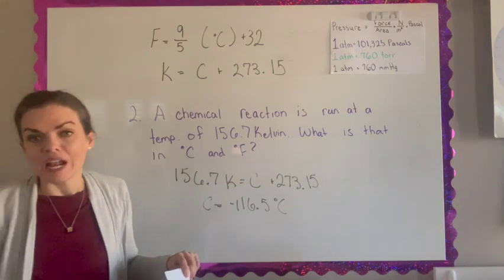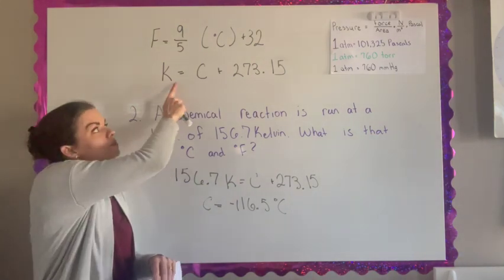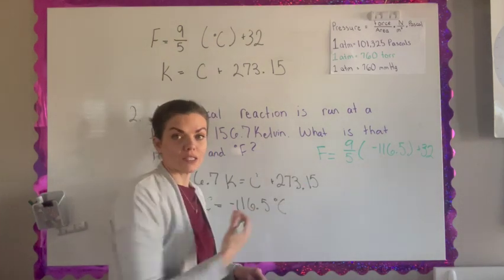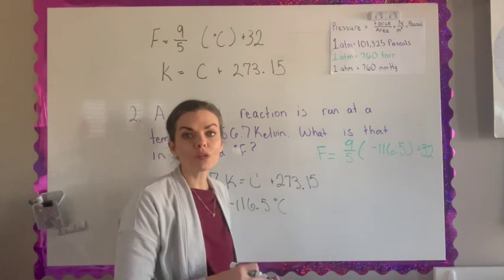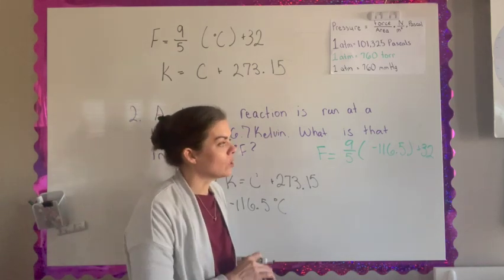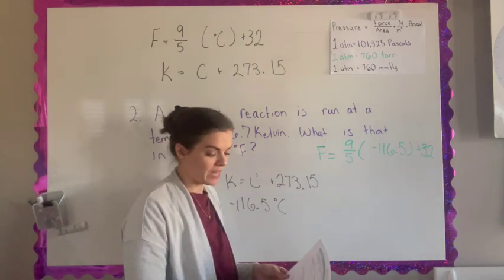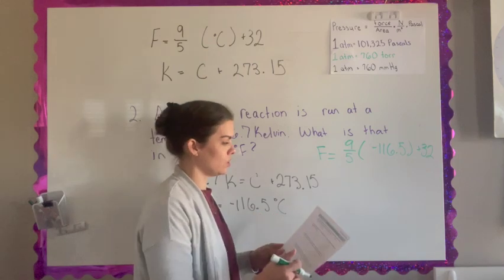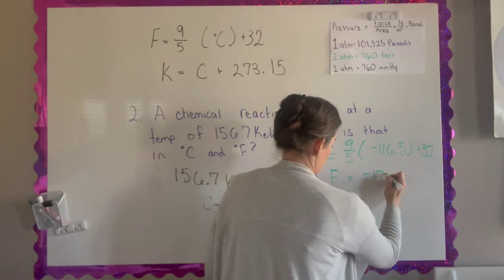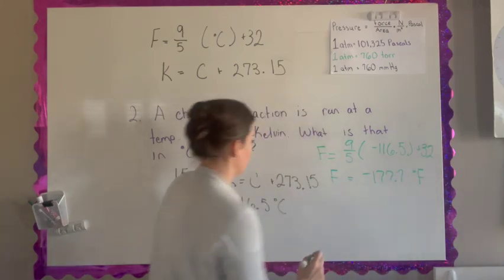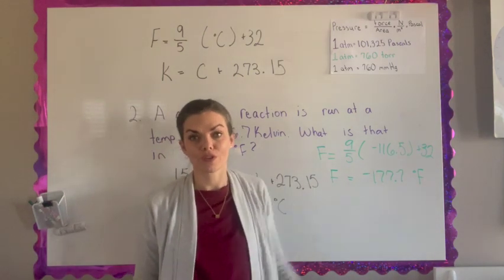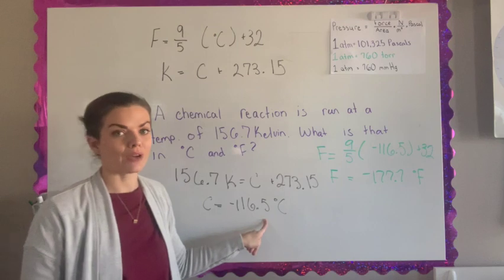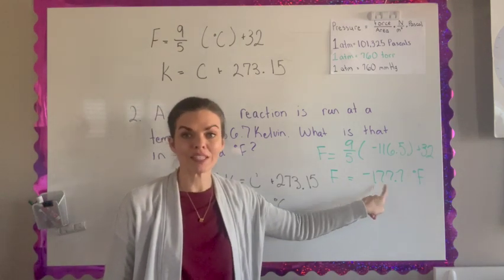Now I can't go from Kelvin to Fahrenheit. I have to go from Kelvin to Celsius and then I can go from Celsius to Fahrenheit. When you're using the Fahrenheit formula, you can use nine fifths or many of my students like to use 1.8 as a decimal. But also you have to remember order of operations. If there's a place where people mess up in this equation, it is that they don't do the multiplication first. So make sure that you do the multiplication first before you do the addition and you get Fahrenheit of negative 177.7 degrees Fahrenheit. So 156.7 degrees Kelvin converts to negative 116.5 degrees Celsius and negative 177.7 degrees Fahrenheit.